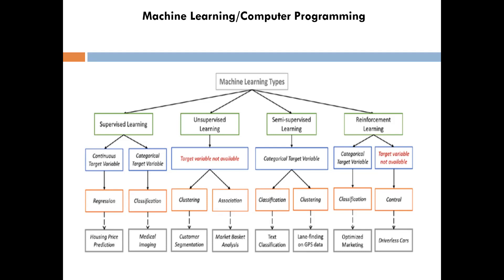Fraud detection is an example of a class imbalance problem. Fraud happens once in 10,000 or 1 million transactions. Millions of transactions happen every minute, but fraud might happen only once an hour. After almost 50-100 million transactions, there's one fraud. Can you just say 99.9999% accuracy and ignore fraud? That question sets up an important point about model evaluation.